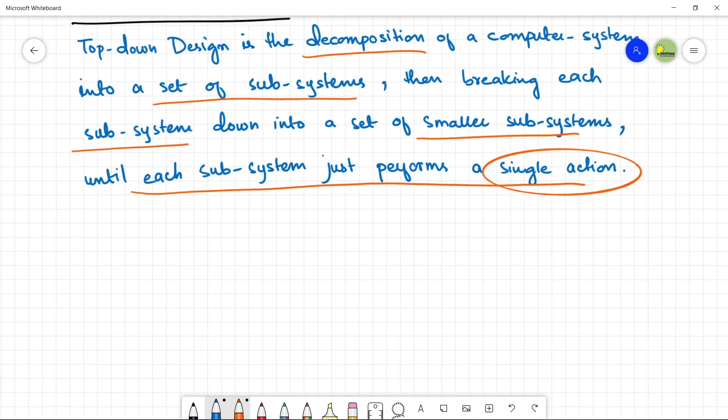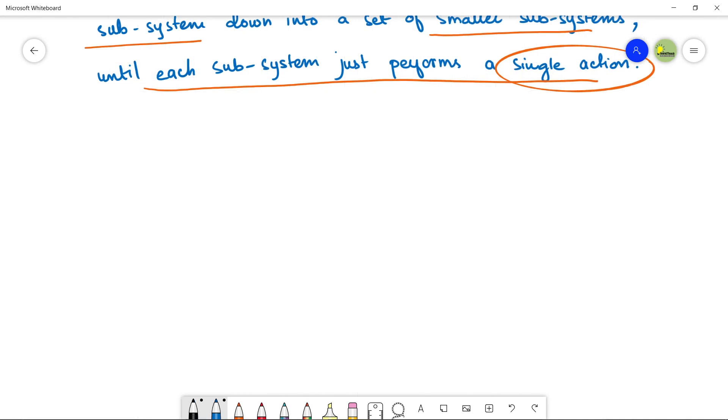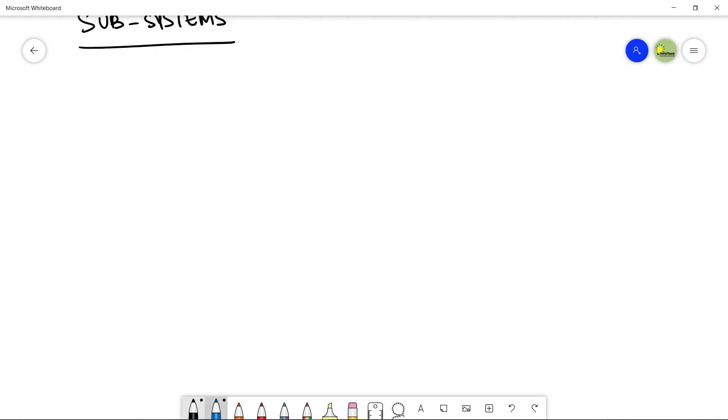In the previous video, I have already told you about the subsystems in a computer system. We had five subsystems that make up a computer system. Let's talk about this. I'm making a top-down design here. The very first at the top would be a computer system.